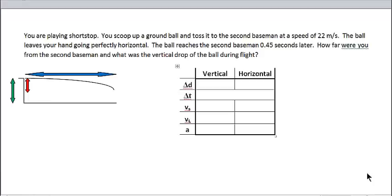You're playing shortstop, that would be on a baseball team or softball. You scoop up a ground ball and toss it to the second baseman at a speed of 22 meters per second. The ball leaves your hand going perfectly horizontal. The ball reaches the second baseman 0.45 seconds later. How far were you from the second baseman and what was the vertical drop of the ball during the flight?